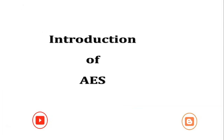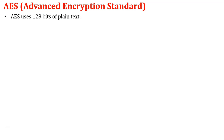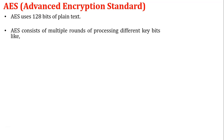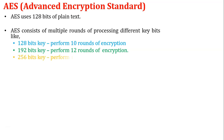Let's start with the first topic: introduction of AES. AES stands for Advanced Encryption Standard. This algorithm uses input as 128 bits of plain text, and another input is an encryption key which comes in different sizes. AES consists of multiple rounds of processing: a 128-bit key performs 10 rounds of encryption, a 192-bit key performs 12 rounds, and a 256-bit key performs 14 rounds.